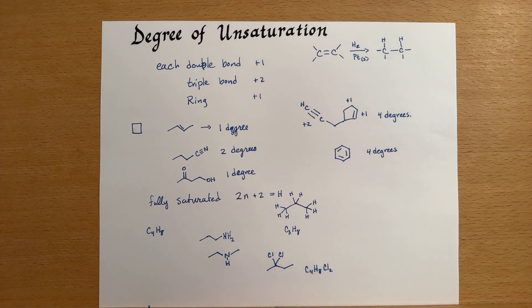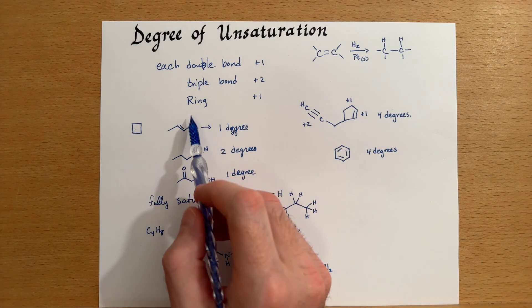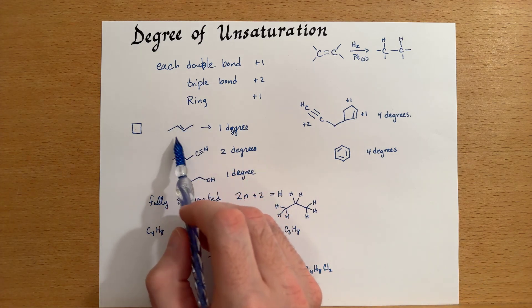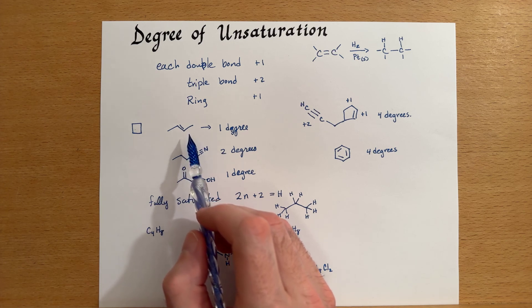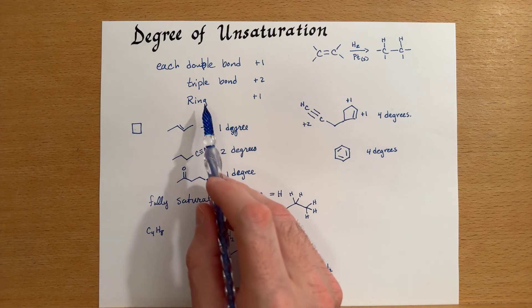So you can play around with this and do a few examples and try to look at a few different ways of using this. But one of the main ways is to be able to draw isomers of a structure and recognize that if I have a double bond in my structure, I may be able to include rings as a constitutional isomer.